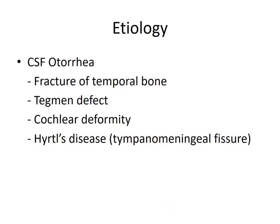When CSF comes out from the ear it is called CSF otorrhea. CSF otorrhea can be because of fracture of the temporal bone — which can be longitudinal or transverse with respect to the petrous part — and in longitudinal fracture CSF otorrhea is more commonly seen. There can also be CSF otorrhea because of a defect in the tegmen plate, the dural plate which separates the middle ear from the middle cranial fossa. CSF otorrhea can also be because of any congenital cochlear deformity, or a condition with a congenital tympanomeningeal fissure, which is called Hyrtl's fissure or disease.